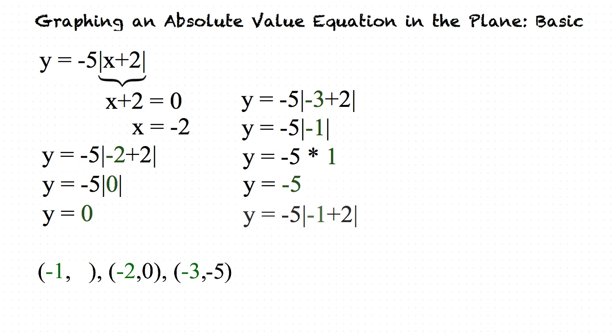Now we can substitute in negative 1. Negative 1 plus 2 results in 1. Since 1 is positive, the absolute value of 1 is 1. After multiplying negative 5 by 1, we get negative 5 for our final y value.